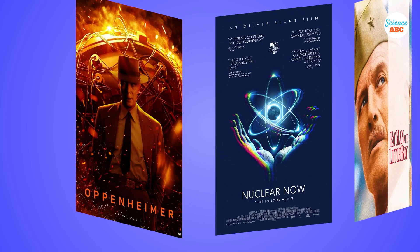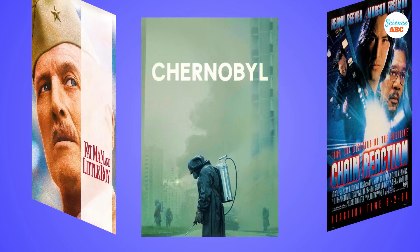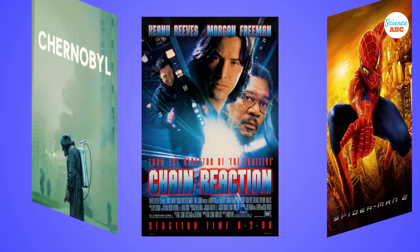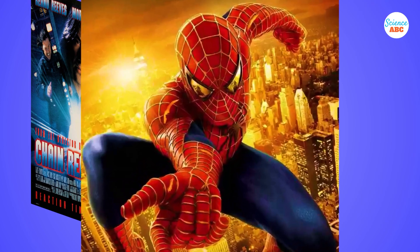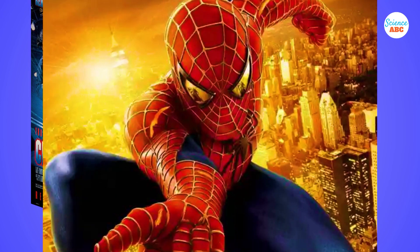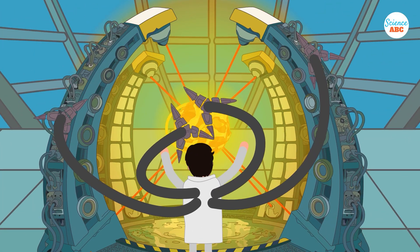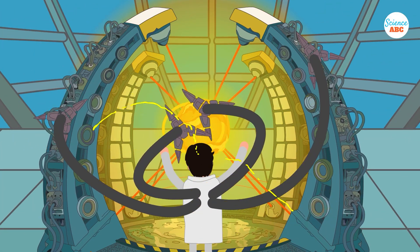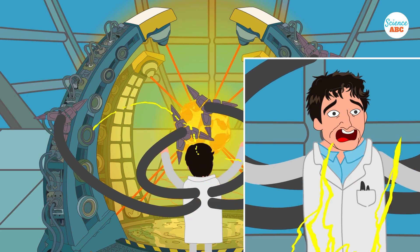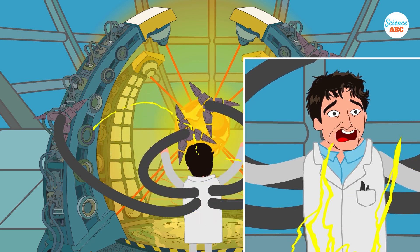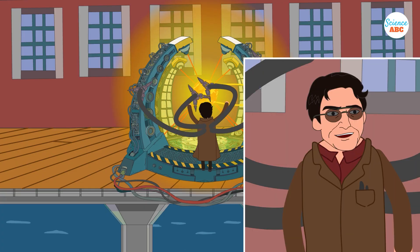Fission and fusion are also popular in sci-fi and pop culture. One of the most famous examples is the movie Spider-Man 2, starring Tobey Maguire as Spider-Man. In the movie, a nuclear fusion reaction goes wrong, and the lead scientist, Dr. Otto Octavius, turns into the movie's villain and tries to achieve another successful fusion reaction.